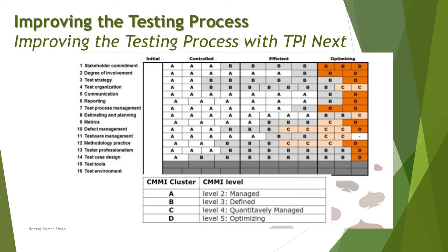The 16 key areas defined in TPI Next are: stakeholder commitment, degree of involvement, test strategy, test organization, communication, reporting, test process management, estimation and planning, metrics, defect management, testware management, methodology practice, tester professionalism, test case design, test tools, and test environment. These are the 16 aspects that TPI Next targets to improve the process, supported by the test maturity matrix model, which assists TPI Next in continuously practicing improvement over time.